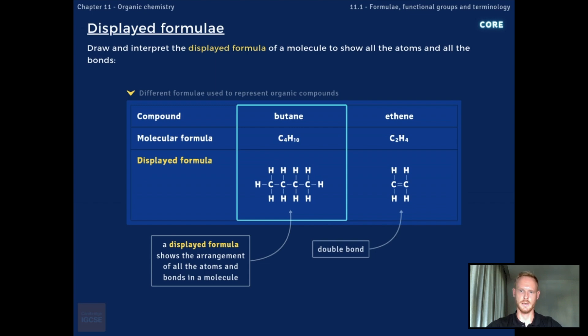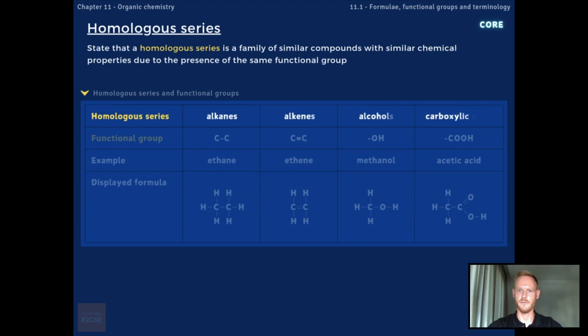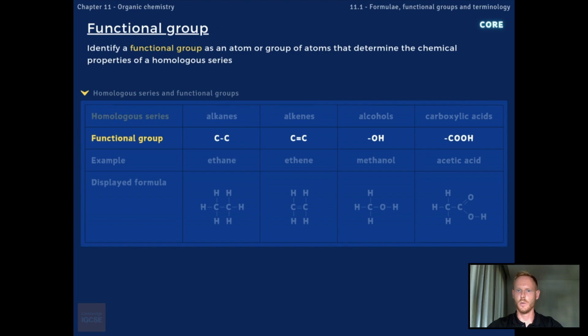A homologous series is a family of similar organic compounds. Examples include alkanes, alkenes, alcohols and carboxylic acids, each of which we'll cover in more detail later in the chapter. The compounds in a homologous series have similar chemical properties because they all have the same functional group.